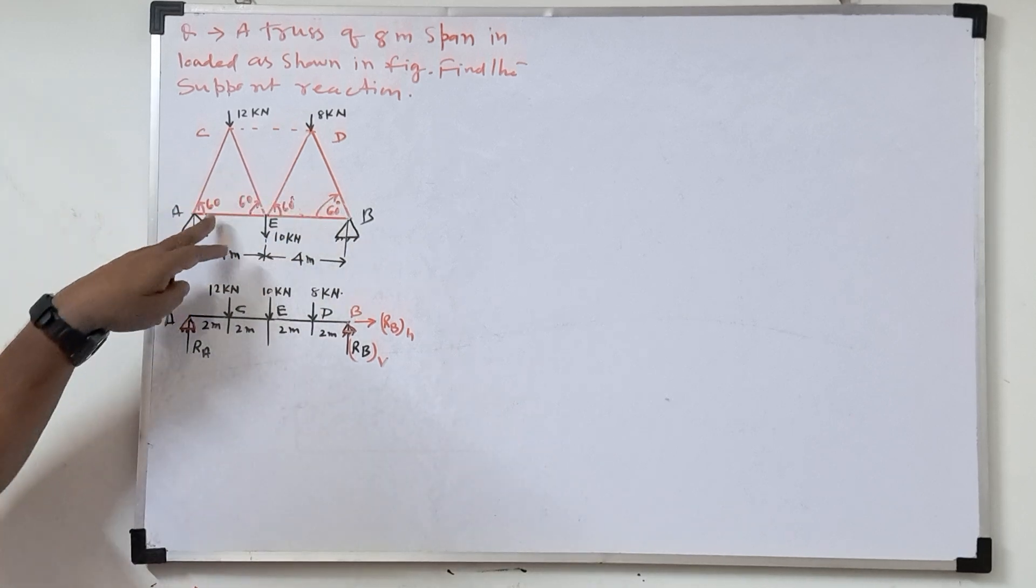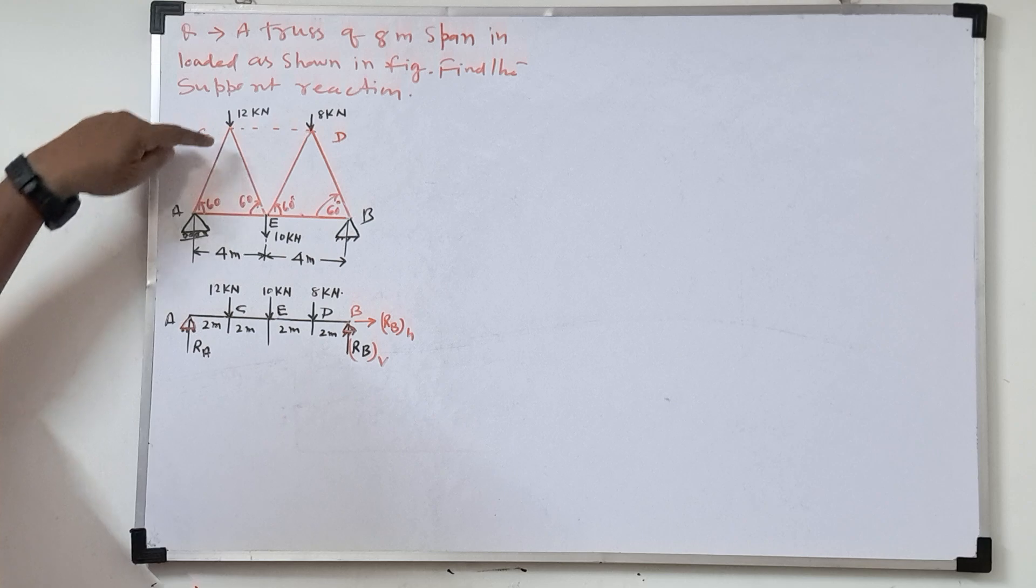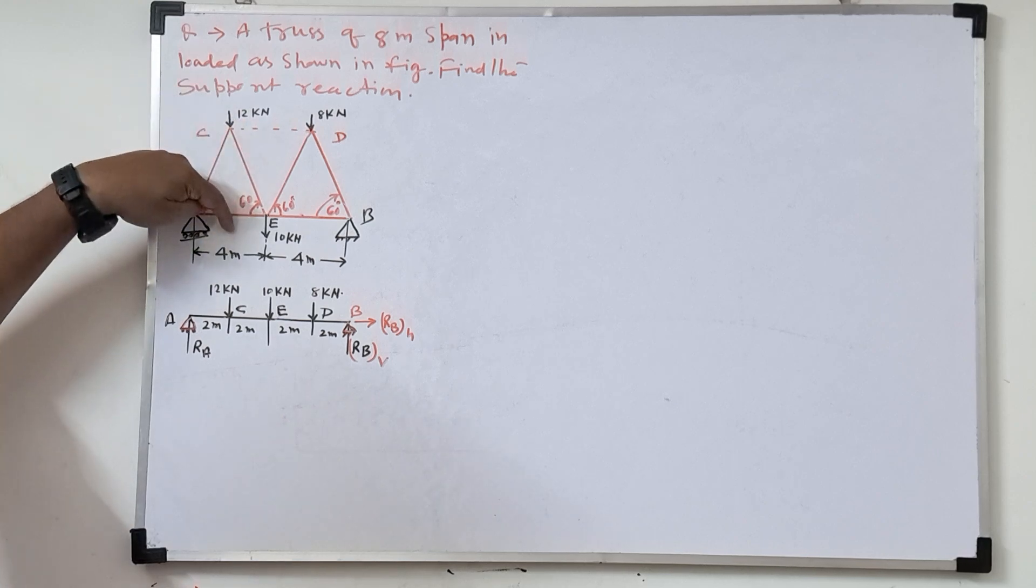So this suppose the given equilateral triangle. Equilateral triangle means all angles will be 60 degree, 60 degree, 60 degree. So that means this load acting in the middle. Load will act in the middle.